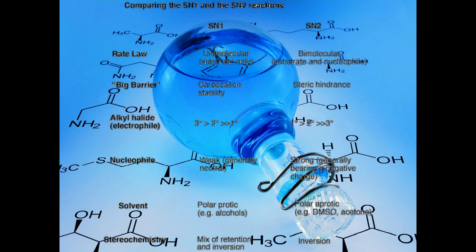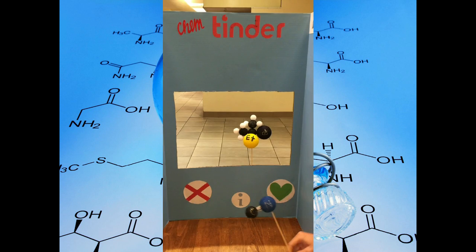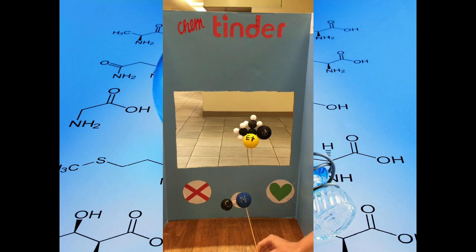For SN2, no tertiary will do. For sterics, their electrons repulse. Leaving group? Well, it doesn't matter — a strong nucleophile solves everything. Another day, another molecule.